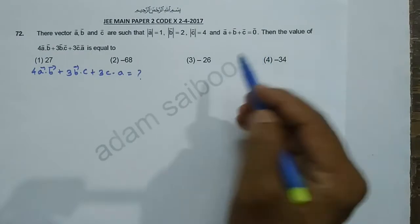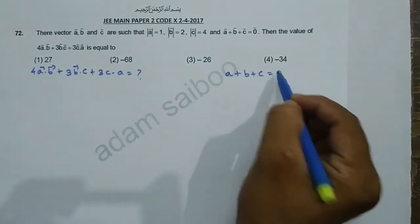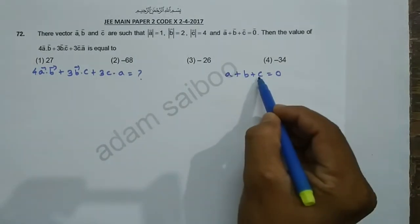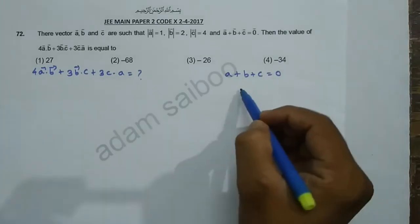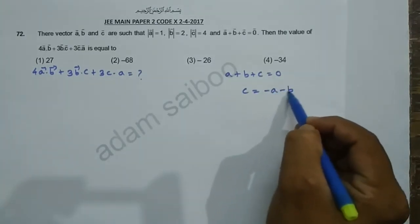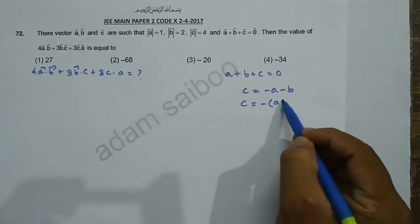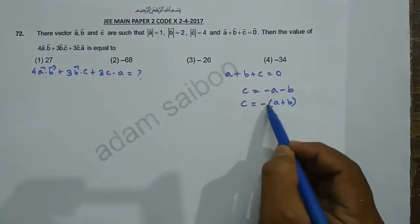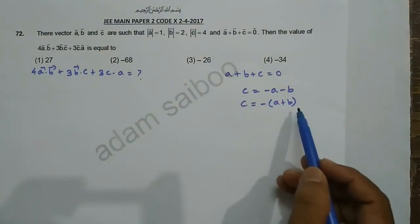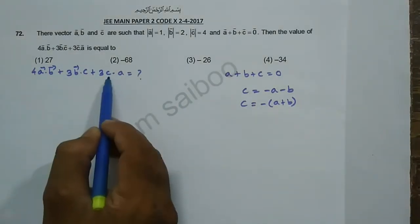Since A vector plus B vector plus C vector is equal to zero, C vector is equal to minus of A vector plus B vector. That is, C = -(A + B).